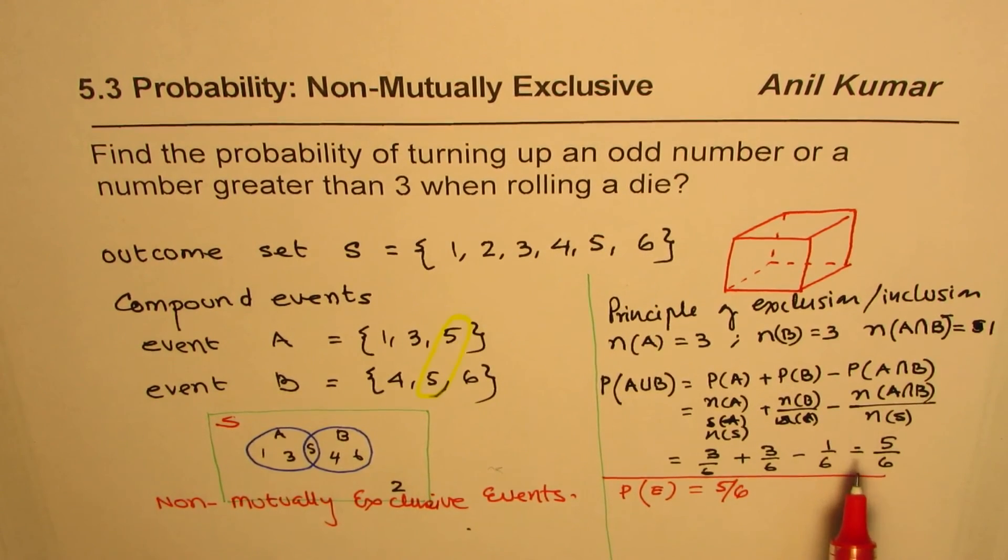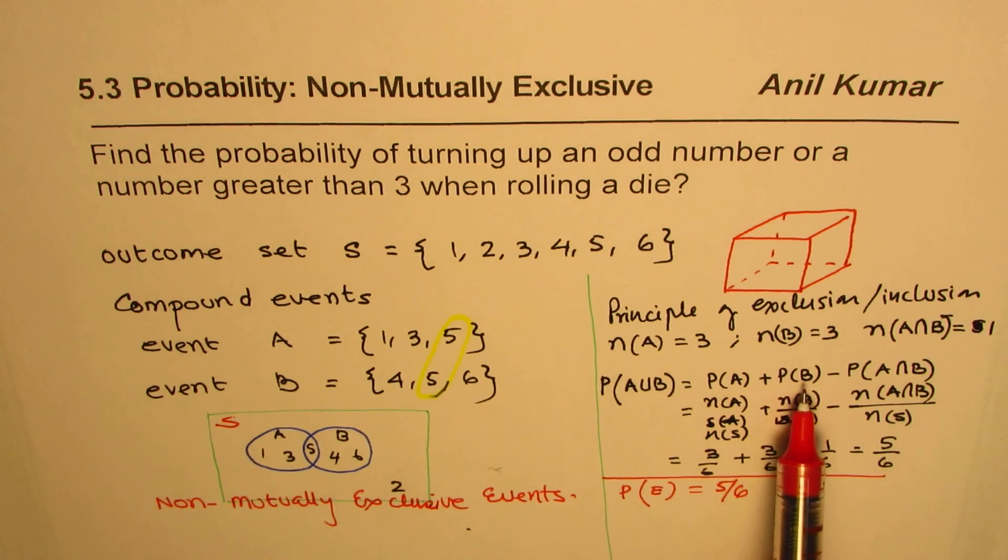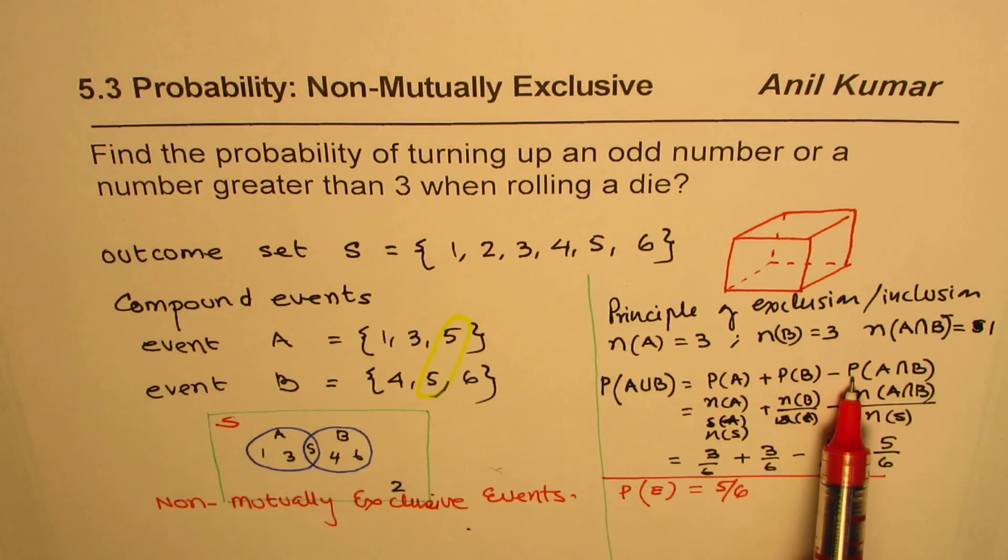However, it is important to understand the method. So whenever we have non-mutually exclusive events, we need to add the probability of each event and take away probability of intersection of the two. And all the best.